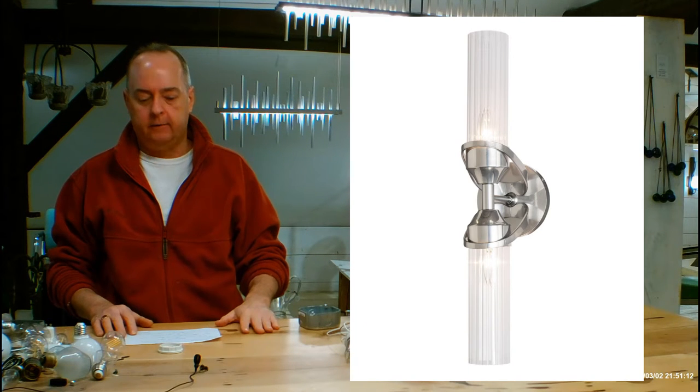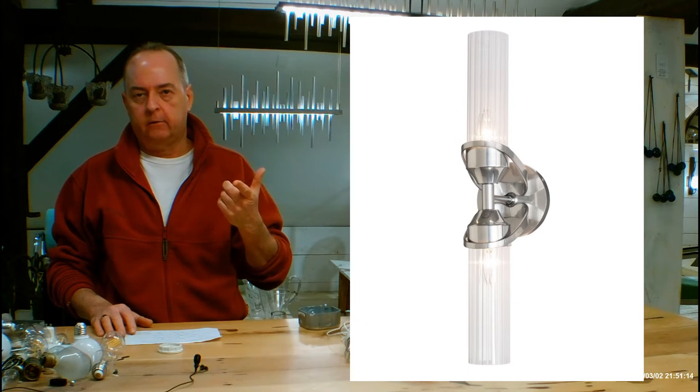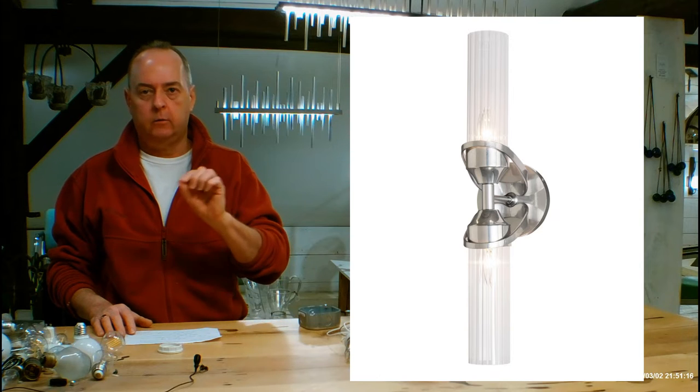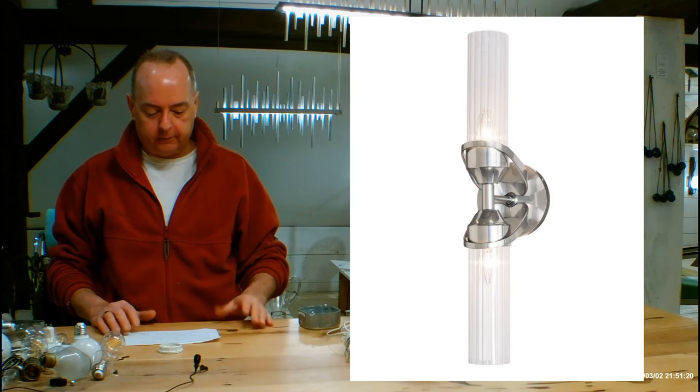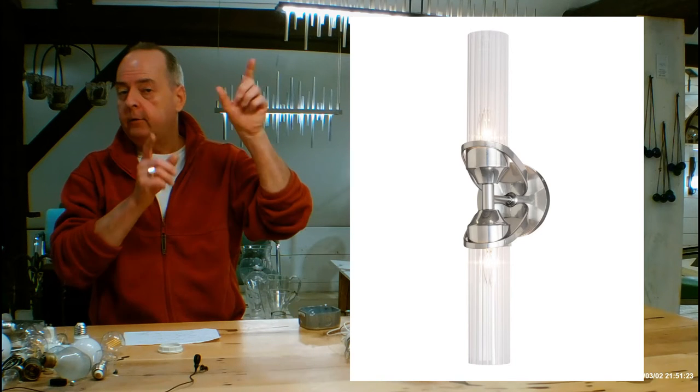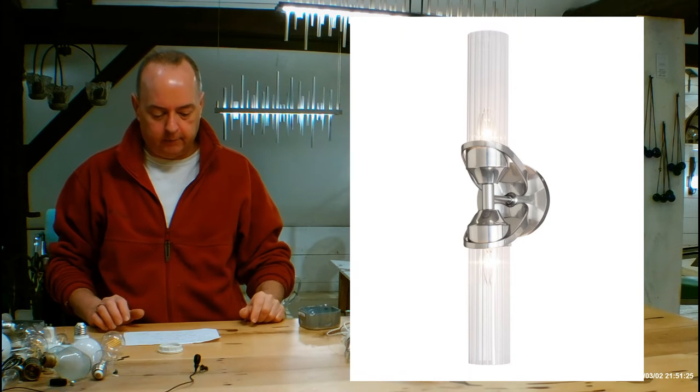It's a dimmable sconce, so you want to put it on a dimmer. Make sure that you tell your installer you're using LEDs if you are going to be doing that, so they put the right dimmer on the wall. Let's talk about the size of this based on if you use it vertically.